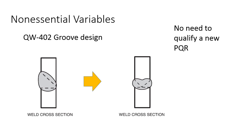All we need to do is write down in our weld procedure and come up with a new revision. So if we were revision one, we revise the weld procedure and it becomes revision two. We add this new joint configuration to it — that's all a non-essential variable is telling us. You still have to address it. It has to be on your weld procedure. It doesn't need to be on your PQR, but it needs to be on your welding procedure specification. We don't have to go back and qualify a new PQR like we would if we switched P numbers, switched a different welding process, or switched to a different F number — a different type of filler metal.